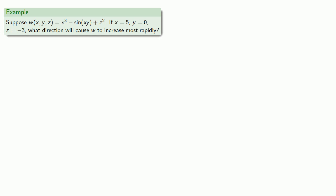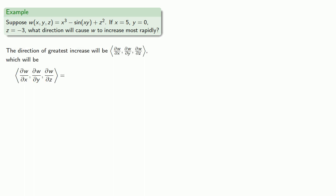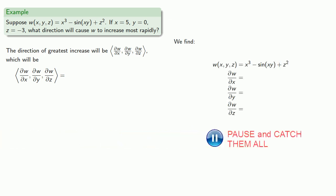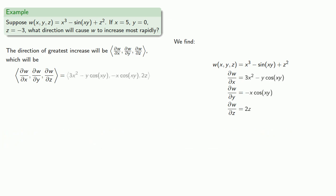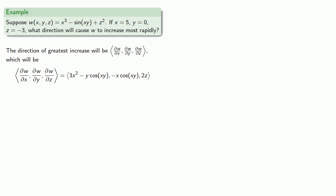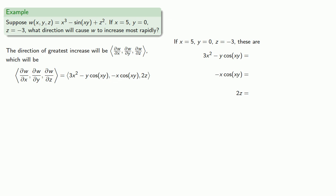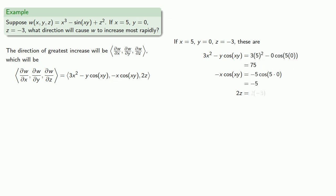Suppose we wanted to find the direction of greatest increase. The direction of greatest increase is the vector consisting of the partial derivatives. Let's say our function is w equals x cubed minus sine of xy plus z squared. We find the partial derivatives, and their values depend on x, y, and z. If x equals 5, y equals 0, z equals 3, then these partial derivatives have specific values, and w will be increasing most rapidly in the direction of the vector (75, -5, -6).